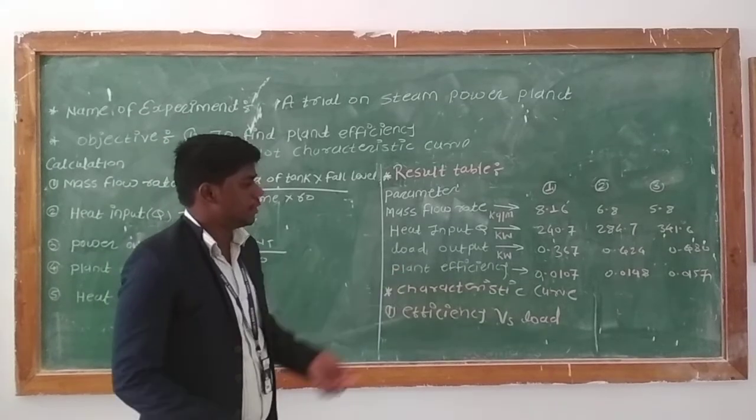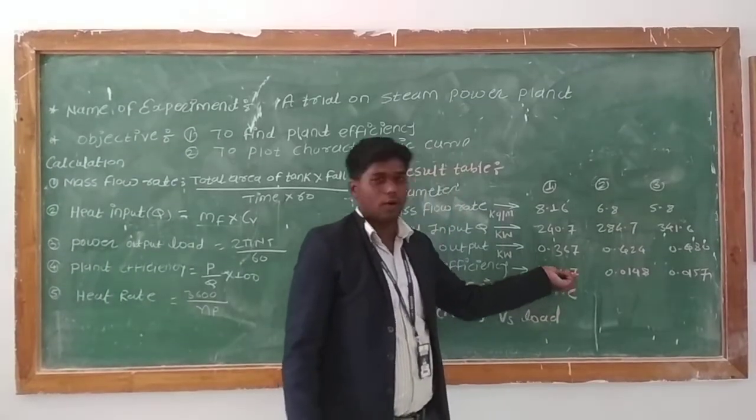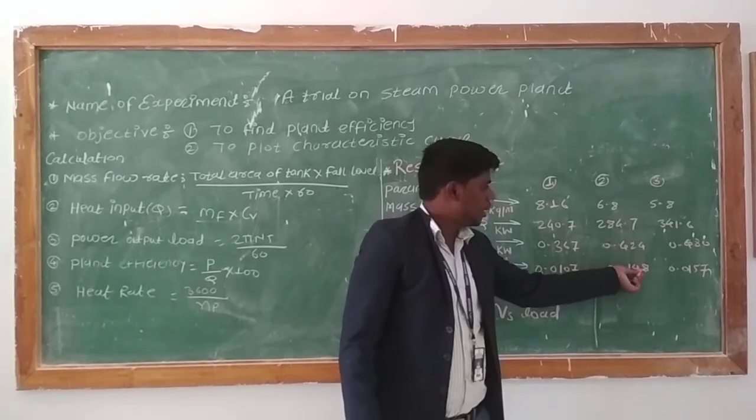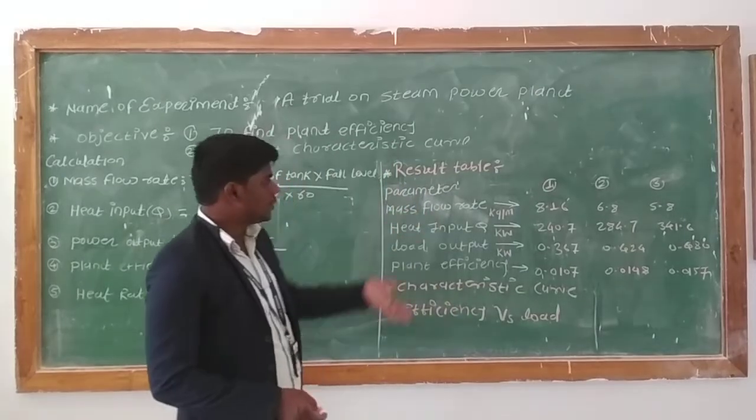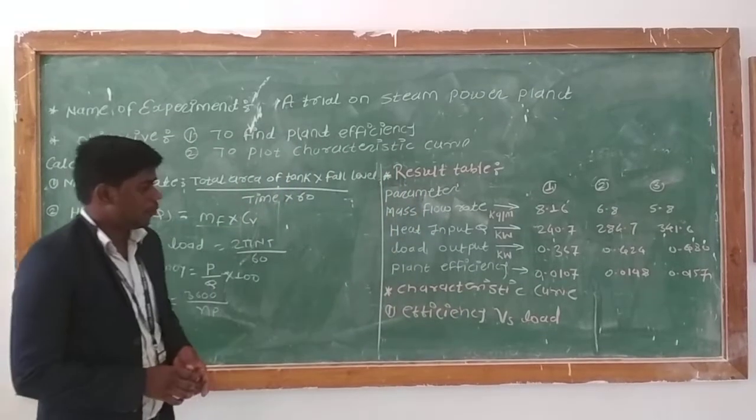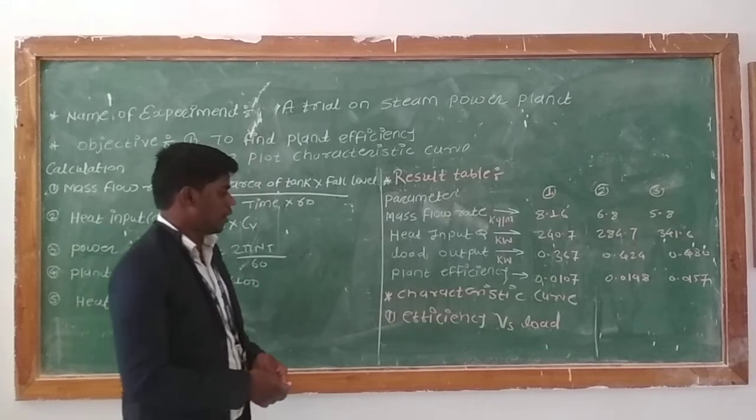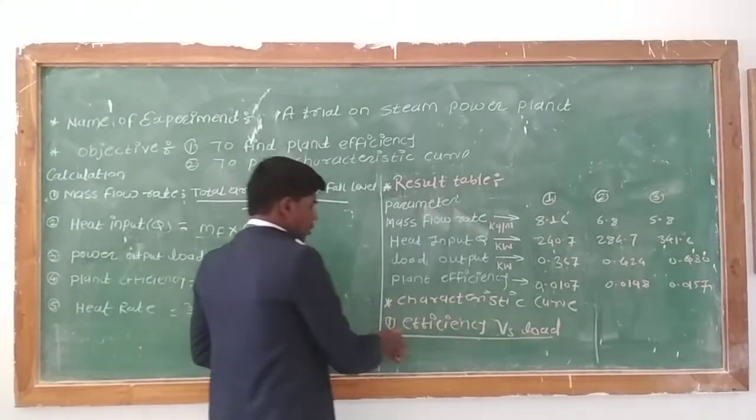Plant efficiency is 0.0107, 0.0148, and 0.0157. The last point is the characteristic curve. In that characteristic curve, first one is plant efficiency versus load output.